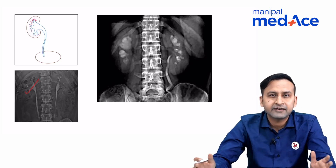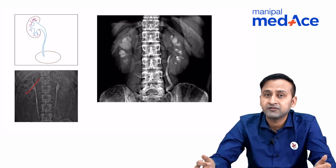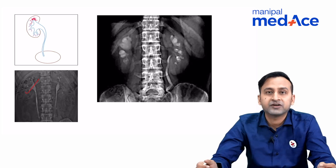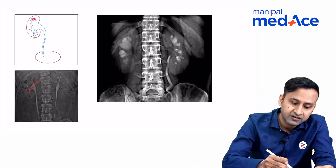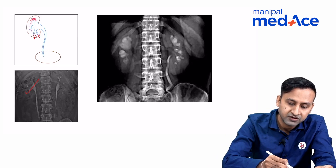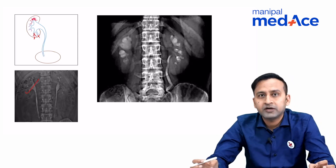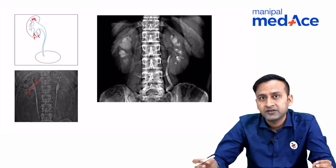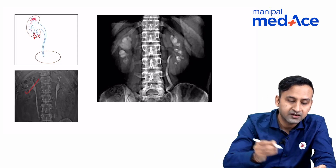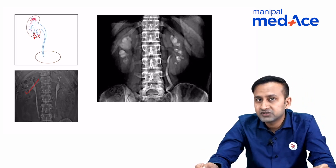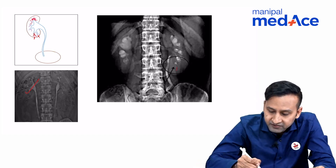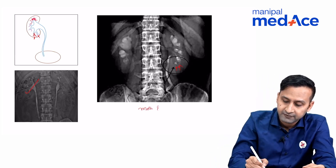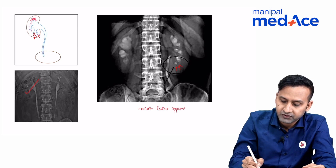What are the bacteria going to do? They will proliferate, divide, and increase the infection. Once the infection increases, they will reach the tip of the medullary pyramids and finally go into the calyceal system. At this stage, the calyx would not appear normal — it would appear as if somebody has eaten it up. This sign is called the moth-eaten appearance, which is the first sign of genitourinary tuberculosis.